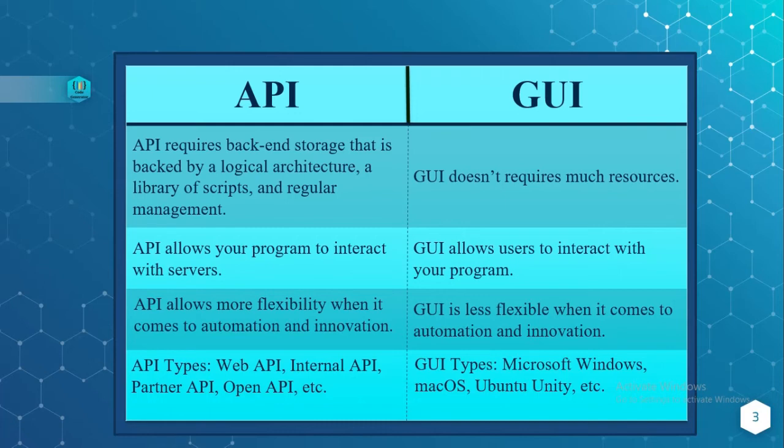API follows more flexibility when it comes to automation and innovation, whereas GUI is less flexible when it comes to automation and innovation. If you want more automation and innovation, you can go with API. Where you want less automation, you can choose GUI.